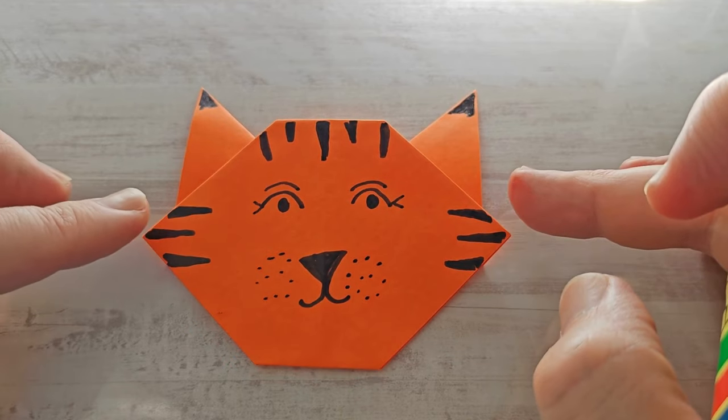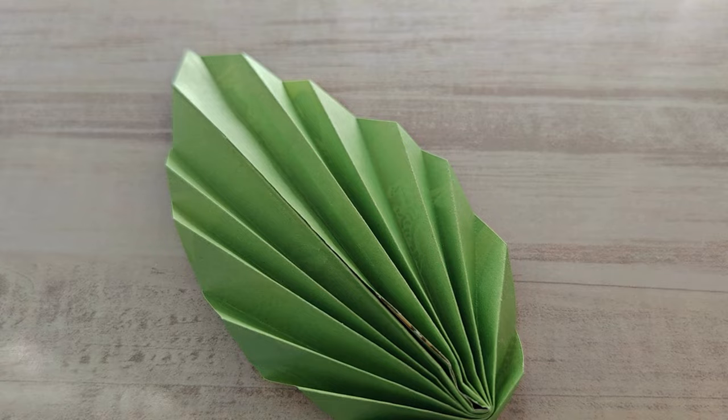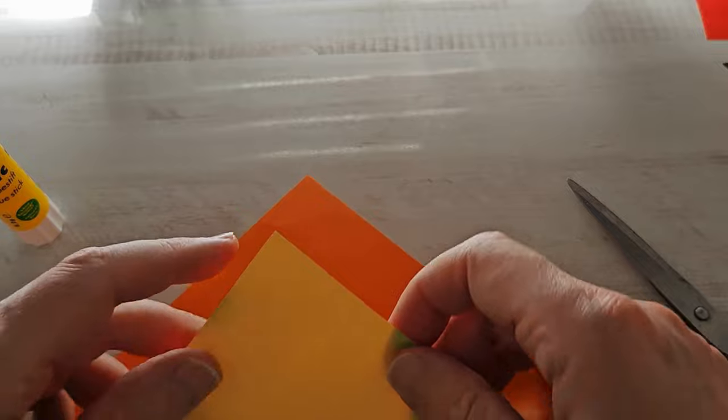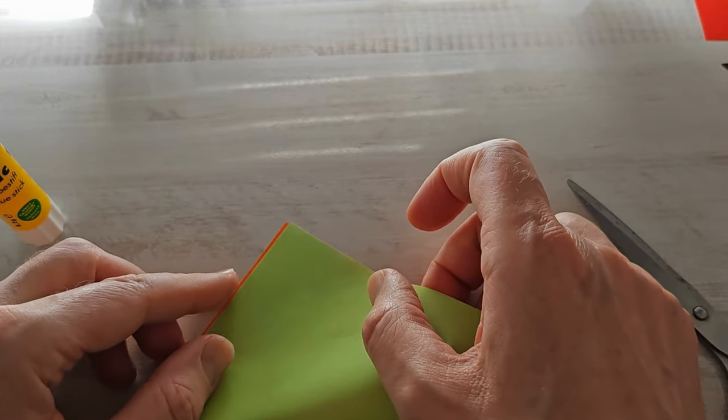Here is your origami tiger. Now we're going to make a leaf. Origami leaf. Fold it right in half.